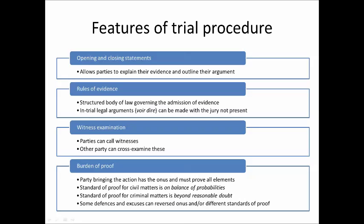Assuming the parties can't resolve the dispute without going to trial, there are additional features that occur throughout the trial in both the criminal and civil sphere. Each side gets to explain what their argument is. This opening statement — made by both prosecution and defence in the criminal sphere, and by each party in the civil sphere — allows them to explain what evidence they intend to adduce, what witnesses they're going to call, and what argument they're making to persuade the judge and jury that the matter should be found in their favour.